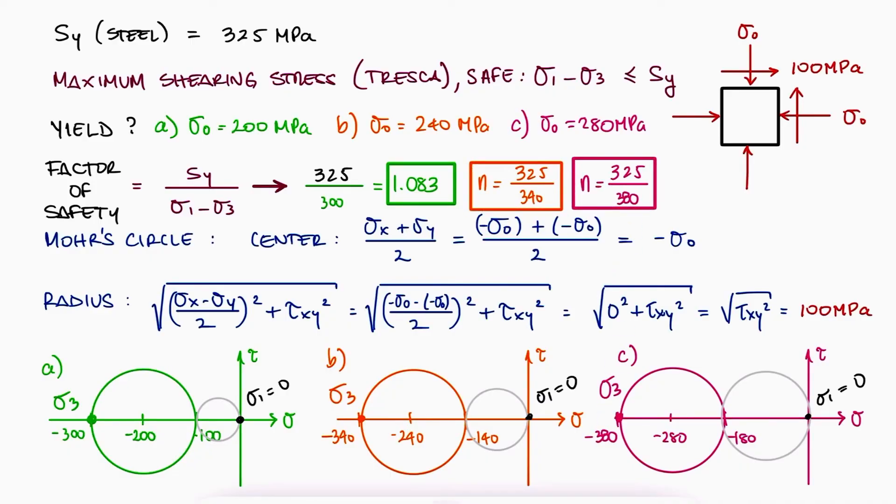This means that only for a σ0 stress of 200 MPa, the material will not yield. Yielding does occur for cases B and C.